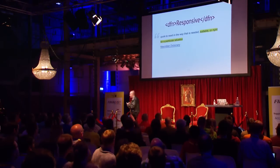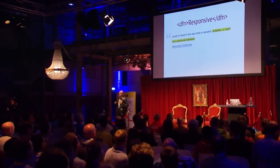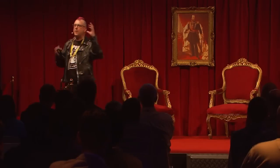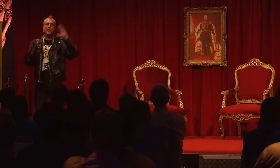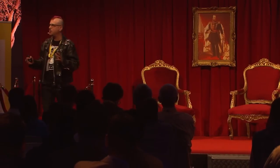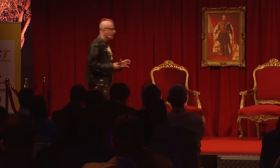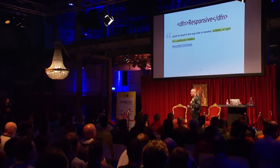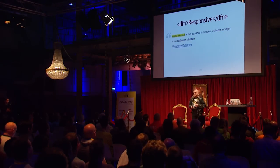It's worthwhile remembering why we call it responsive. In the Macmillan English Dictionary, responsive is defined as quick to react in the way that is needed, suitable, or right for a particular situation. That's why we call it responsive — when it automatically looks like it was designed for whatever device you happen to be viewing on. But there's another part we often forget: quick to react. Speed is really important on the web.